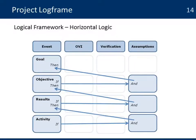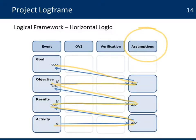Here we see the matrix and how that logic works all the way up. From the activity and the assumptions, we get the results. From the results and the assumptions, we have the objective. If we have the objective and the assumptions are still held and valid, then we know we have achieved the goal. This is an important element that you will see throughout the rest of the course in terms of how we manage those assumptions, and they are a key element to make sure that the logic we have in the project is still valid.